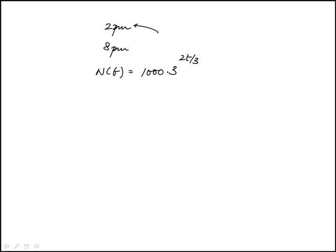This t represents the time from the beginning of the experiment. So here t is 0. If I place t equals 0, this is 1,000 times 3 to the power of 0, which is 1. So there's 1,000 bacteria.